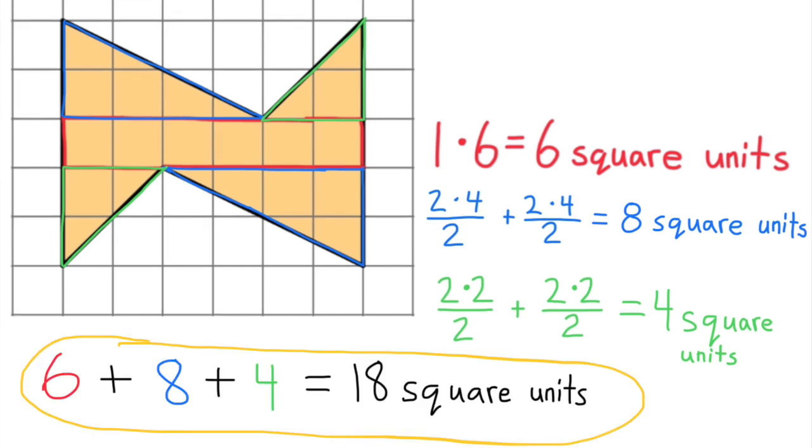If you add up the area of all these shapes that I decomposed, you get 18 square units. The total area of this shape is 18 square units.